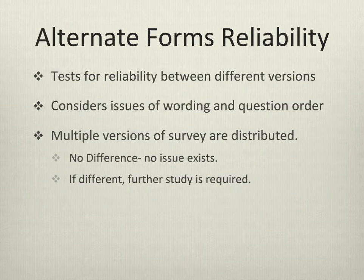Alternate forms reliability also deals with the issue of stability. In this version, you're concerned that perhaps one version of wording is better or worse than another, or that a particular question order may lead to different results than a different question order. In this case, you would create multiple forms of your survey instrument or scale and test for reliability across these versions. If different versions yield similar results, then no difference exists. However, if different versions yield different results, you have to consider which is the most accurate way to capture what respondents mean.